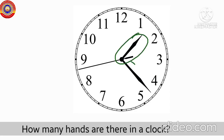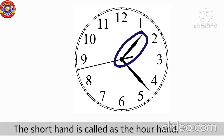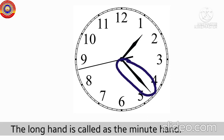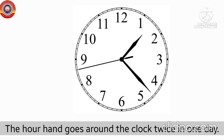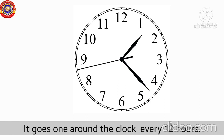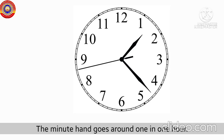There are three hands in a clock face. The short hand is called the hour hand and it shows the hour. The long hand is called the minute hand and shows the minutes. The hour hand goes around the clock twice in one day — it goes around every 12 hours.